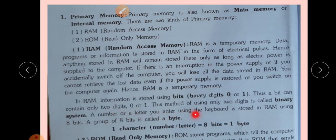A number or letter you enter using the keyboard is stored in RAM using 8 bits. Whatever numbers or letters you type, that information goes into RAM and is stored in 8 bits. A group of 8 bits is called a byte. So for example, 00000001 — this represents one character and we call it 1 byte. Each individual 0 or 1 is a bit, and a set of 8 forms a byte.